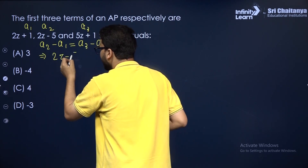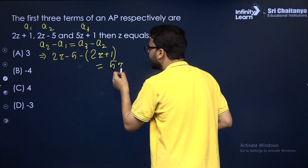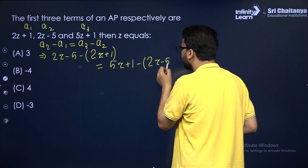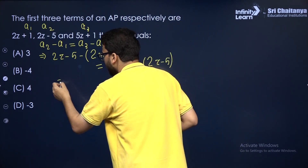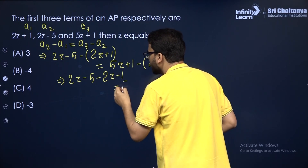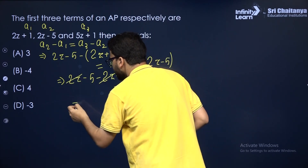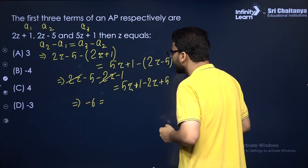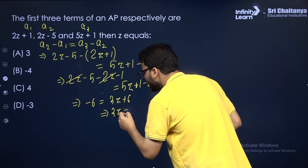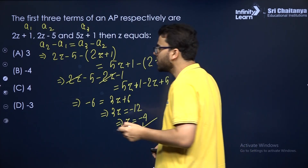So A2 is (2Z − 5), A1 is (2Z + 1), and A3 is (5Z + 1). Opening the brackets: (2Z − 5 − 2Z − 1) = (5Z + 1 − 2Z + 5), which gives −6 = 3Z + 6. So 3Z = −12, therefore Z = −4.